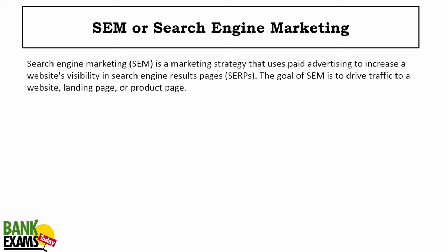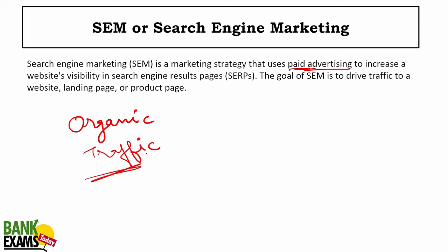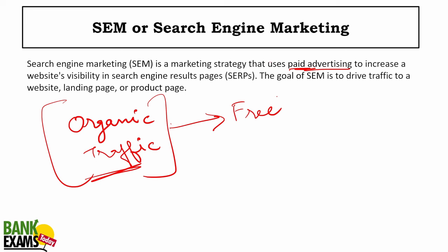SEM — search engine marketing — is using paid advertising to get ranked on Google or Bing. Organic traffic, on the other hand, is free traffic you get from Google by creating useful, informative content and having a fast website.